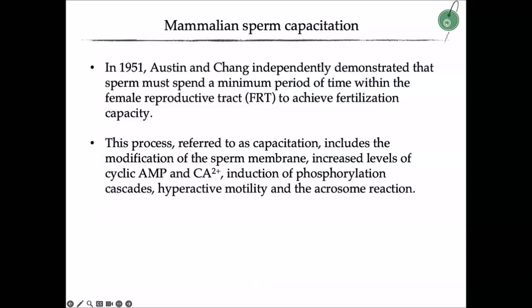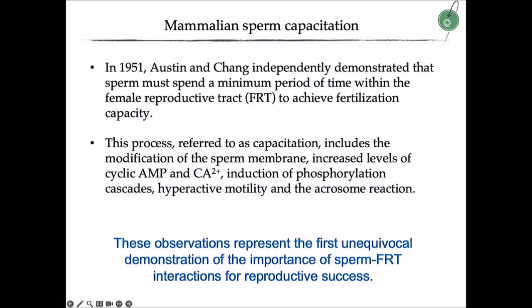It was in 1951 that Austin and Chang independently demonstrated that sperm must spend a minimum amount of time in the female reproductive tract to achieve fertilization capacity. This process, referred to as capacitation, includes a very carefully orchestrated set of events involving modification of the sperm membrane, increases in cyclic AMP and intracellular calcium, and induction of a complex set of phosphorylation cascades.